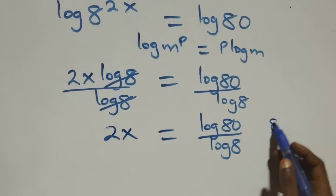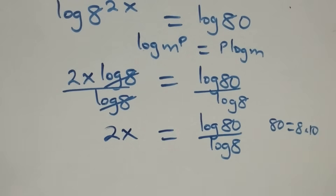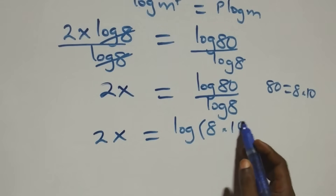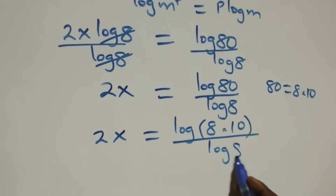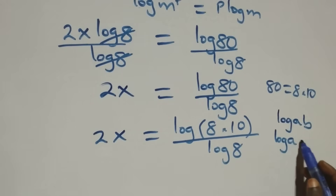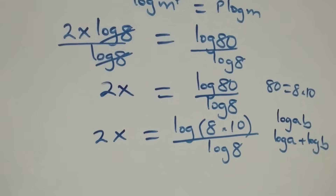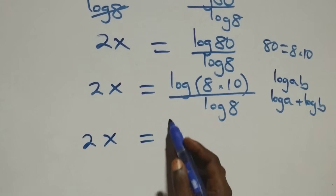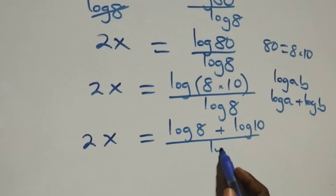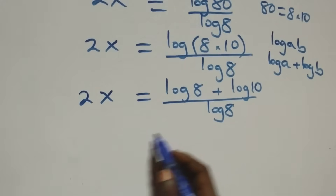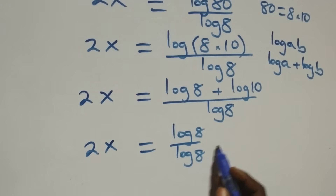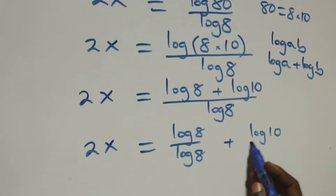From here, 80 can be written as 8 times 10. So we have 2x equals log of 8 times 10 over log 8. This follows from the law of logarithm: log a times b is the same thing as log a plus log b. Separating into two fractions, 2x equals log 8 over log 8 plus log 10 over log 8.